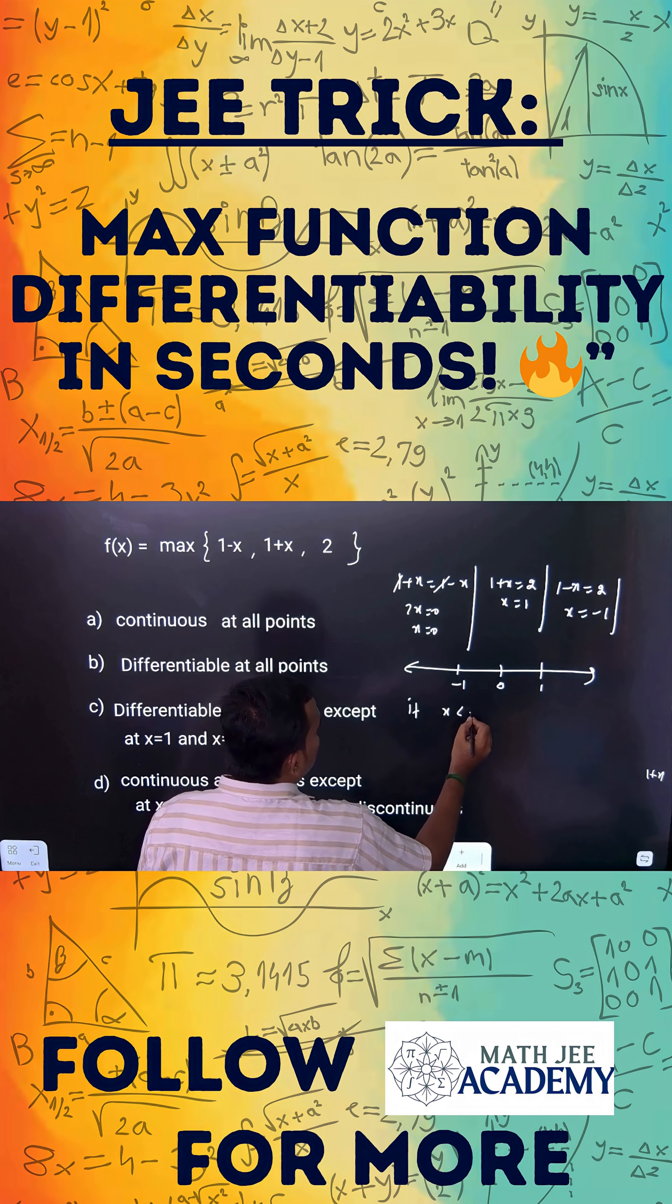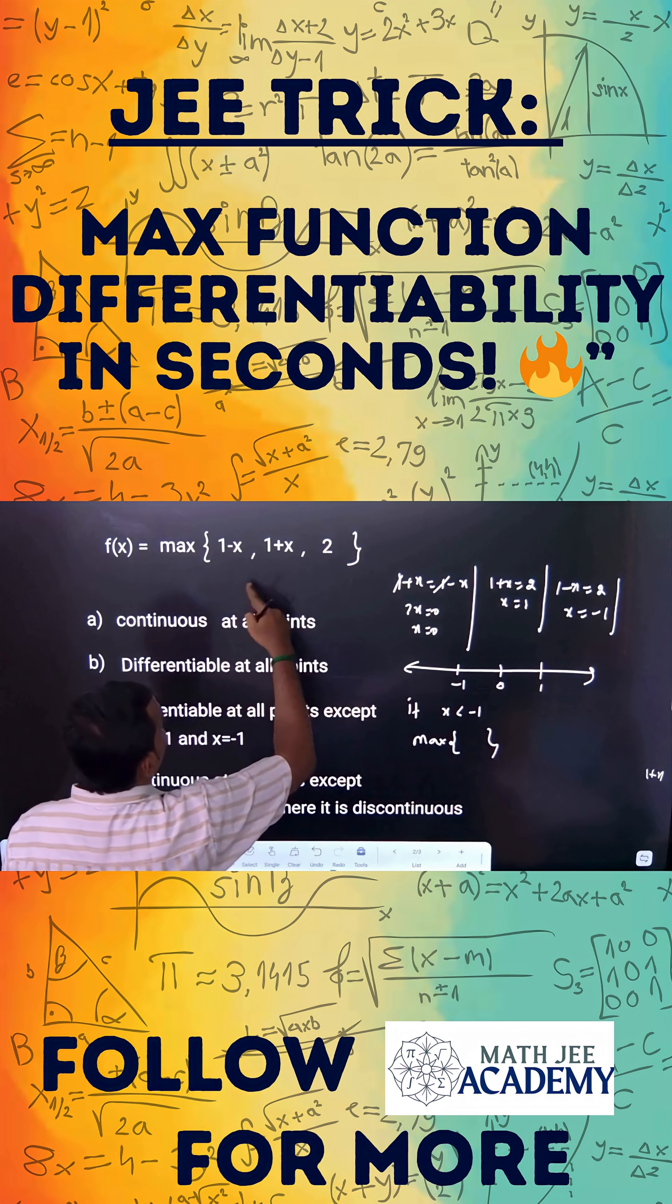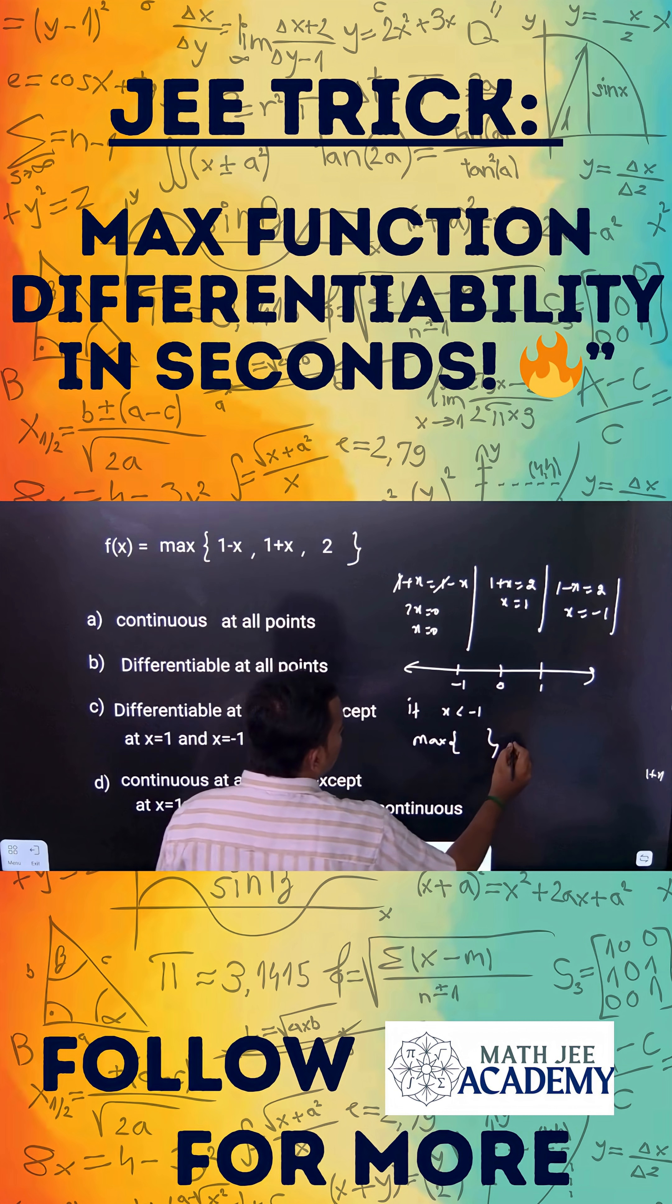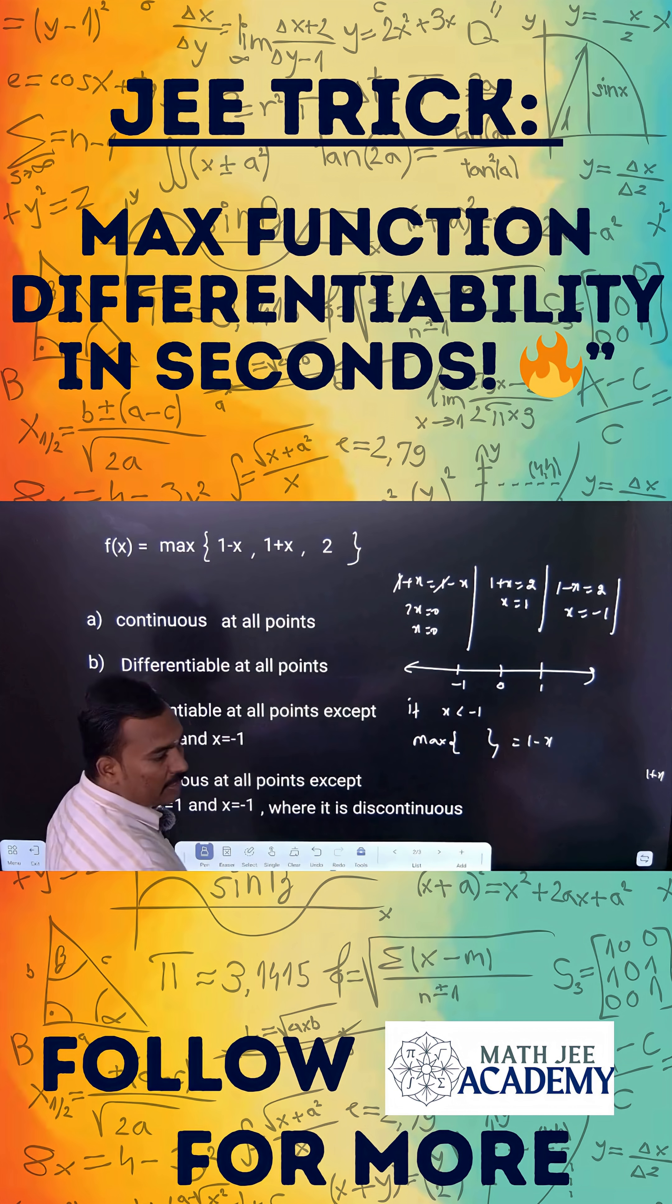Suppose if I take x is less than minus 1, you can check it. The maximum of these three functions will be 1 minus x. So how to verify this? Let us take minus 2 here, it is 3, comparative to 3 functions. So 1 minus x is the maximum.